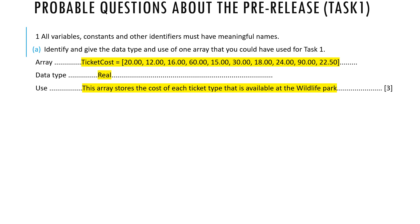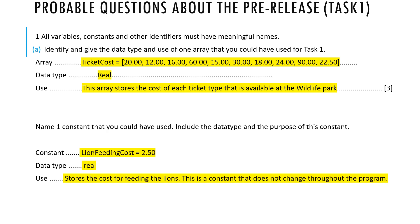Another question they might ask about task 1: name one constant you could have used in your program, including the data type and purpose. One constant could be lion feeding cost = 2.50. The data type is real, and its purpose is to store the cost for feeding the lions — an extra attraction. This is a constant; it does not change throughout the program.